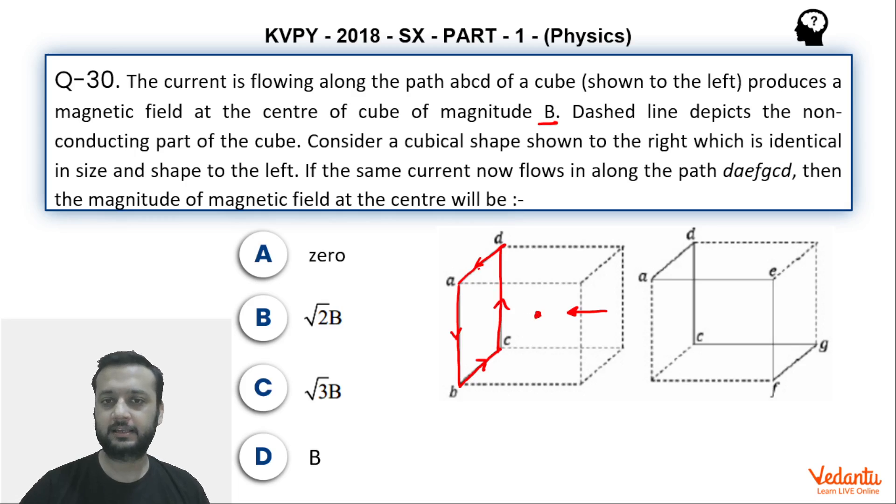So four wires. Due to this we can say that magnetic field at the center is B, is given. Now in the right figure you can say that current is moving on this line like this. You can see this is the path followed by the current.